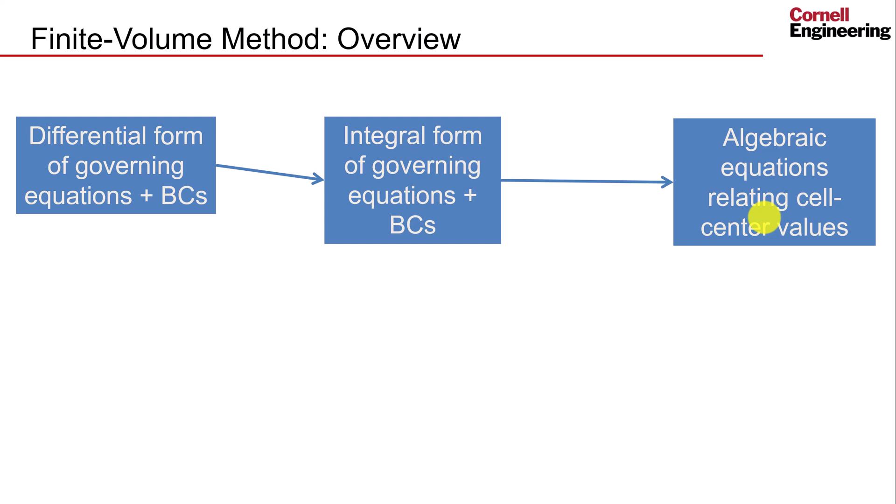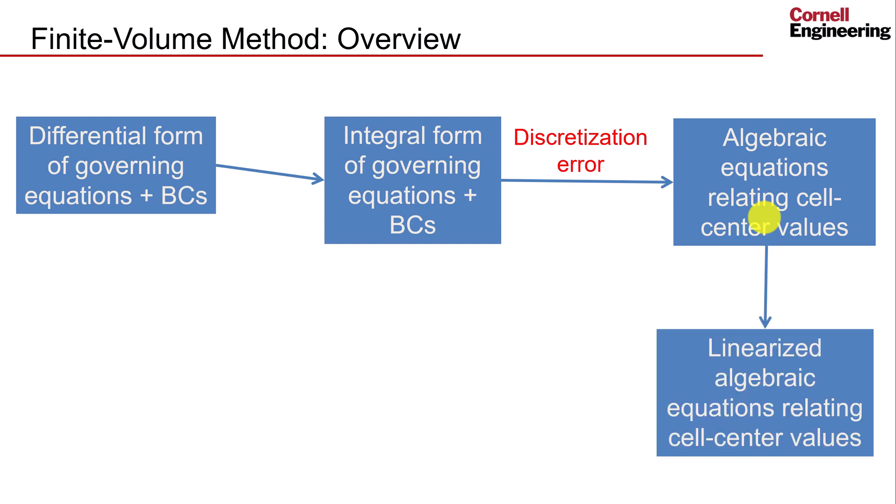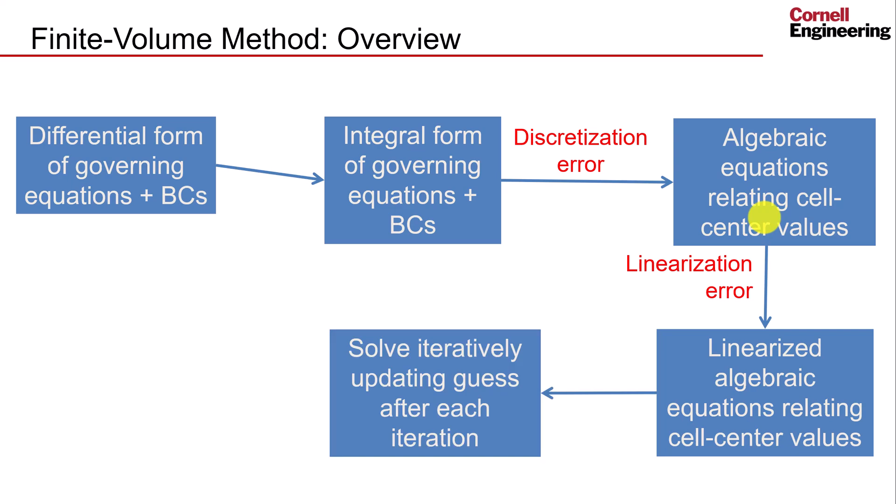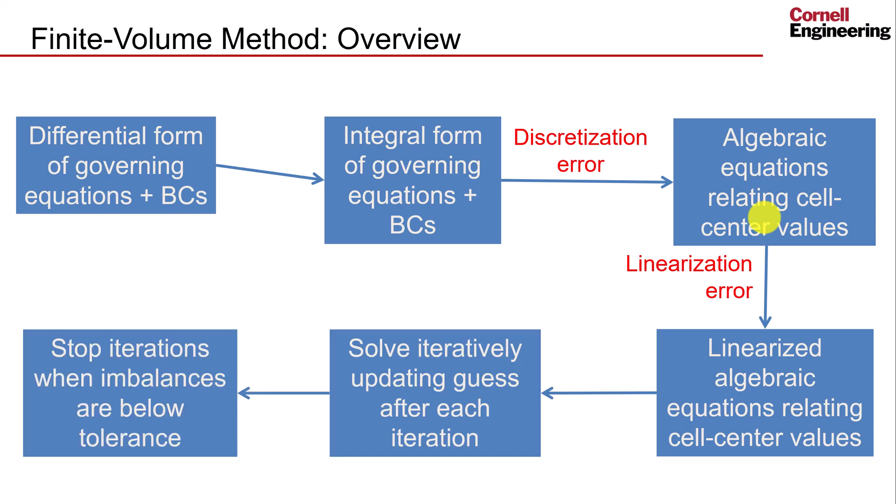To do this, it first goes to the integral form of the governing equations and applies it to each control volume. The process of developing these algebraic equations introduces a discretization error, caused by only finding the values at cell centers. We can reduce this error by refining the mesh. These algebraic equations are non-linear, so to solve them, Fluent must linearize them about guess values. Doing this introduces a linearization error. This process is performed iteratively by continuously updating the guess values, and we repeat this process, until the imbalance falls below a selected tolerance.